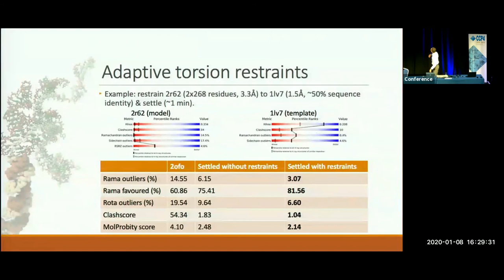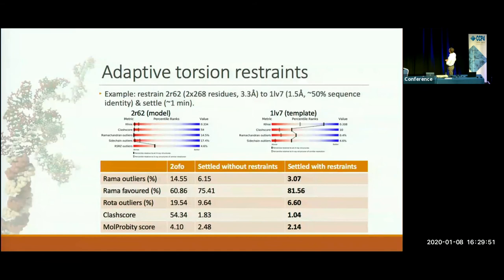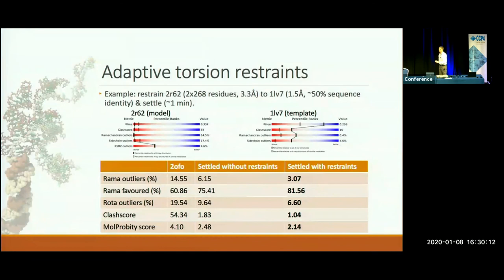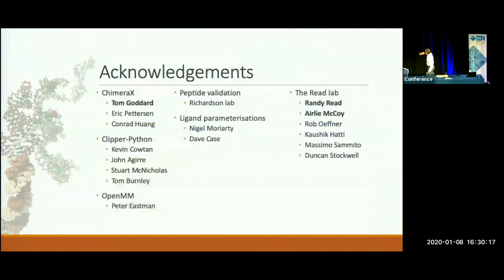One more example, a little more challenging — a more problematic starting model with a MolProbity score of 4.1, which is really up there. The template has only 50% sequence identity rather than 90%, and isn't entirely perfect in itself. If I was doing this in earnest I would probably spend a few hours going through the template before using it as a reference for my new model. But you can see that the use of these restraints is actually improving things further.